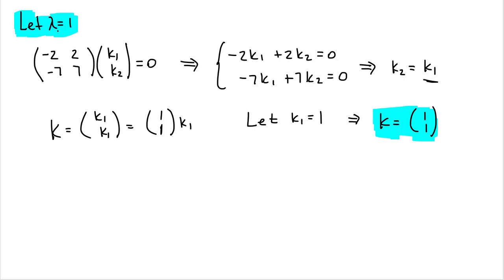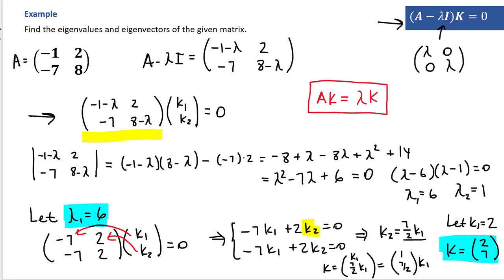While different values of k1 produce different dependent eigenvectors for the same eigenvalue, any eigenvector found for eigenvalue 1 is independent from any eigenvector found for eigenvalue 6. So those eigenvectors from different eigenvalues are independent. These are the steps for finding the eigenvalues and eigenvectors of a given matrix.